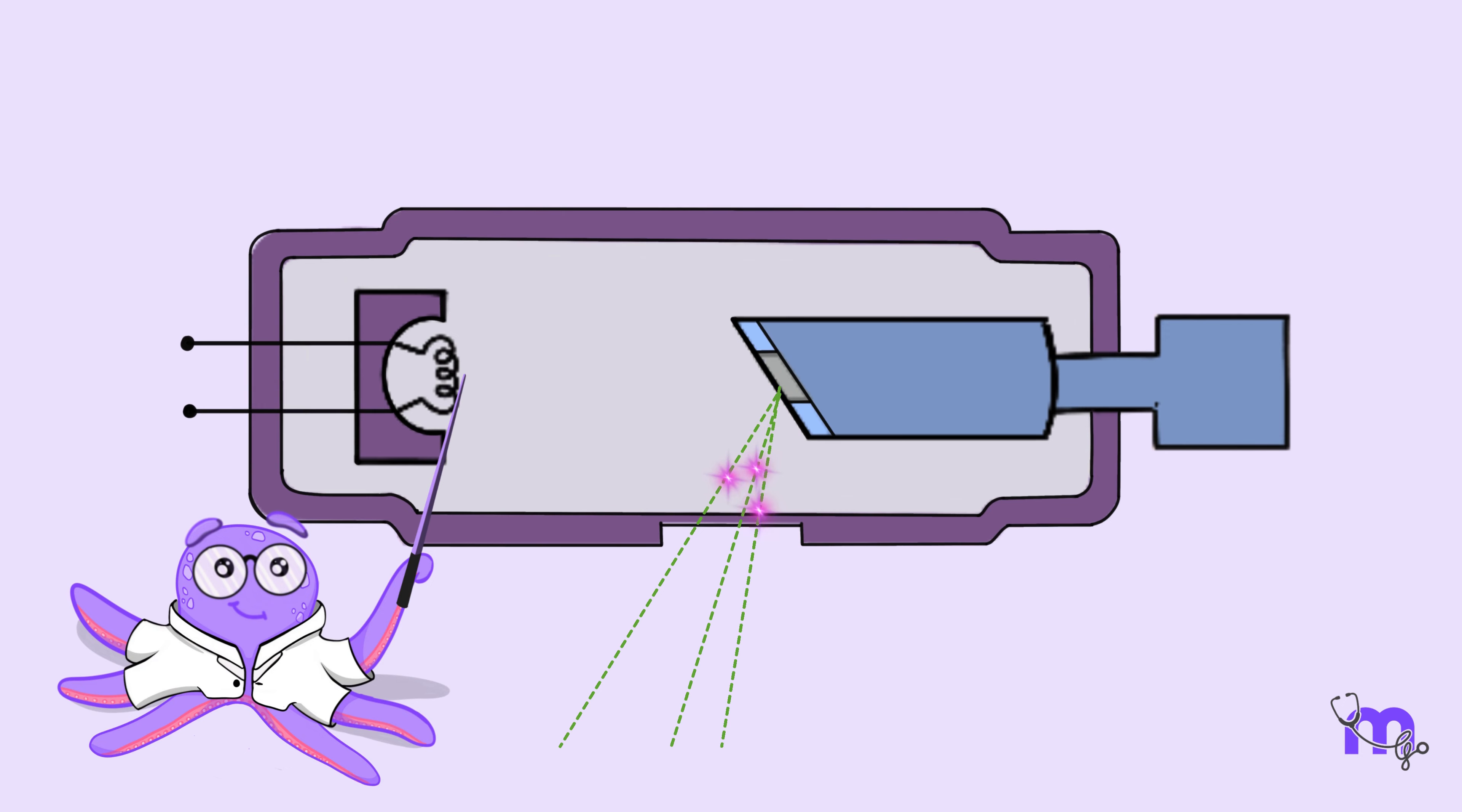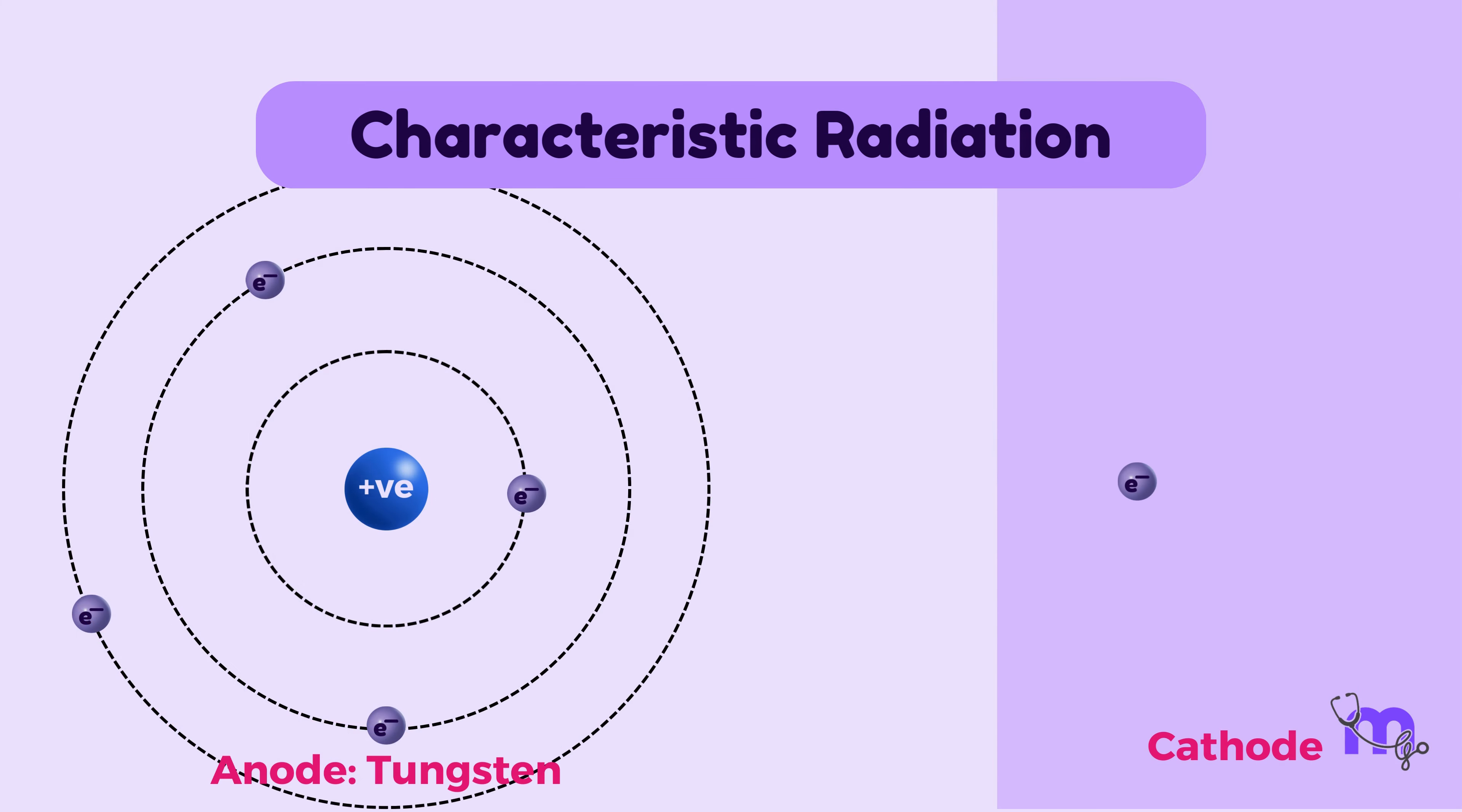Next, let us understand the other type of radiation produced within the X-ray tube, the characteristic radiation. Here, the incoming high-speed electron or bombarding electron from the cathode of the X-ray tube collides with an inner-shell electron of a tungsten atom, i.e., the anode in the X-ray tube. When the kinetic energy of the bombarding electron is greater than the binding energy of the inner-shell electron, the inner-shell electron is ejected out of our target, a process called ionization.